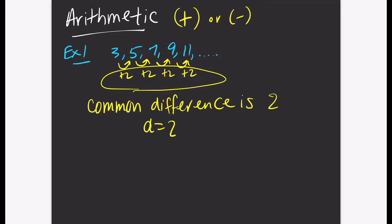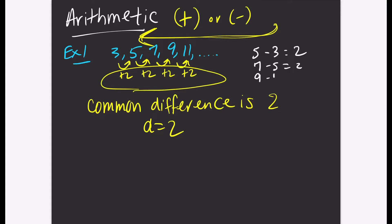Remember, if you add or subtract by the same number every single time, that makes an arithmetic sequence. To find the common difference D, you subtract the second term minus the first, the third term minus the second, the fourth term minus the third, and the fifth term minus the fourth. That's how you get the common difference.